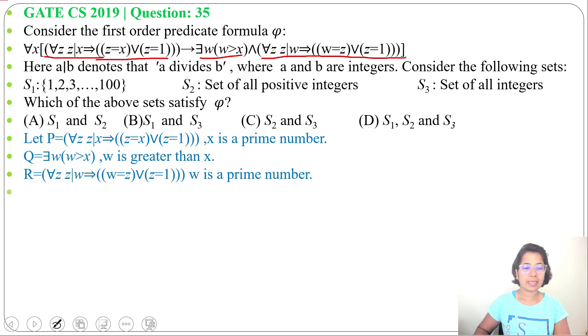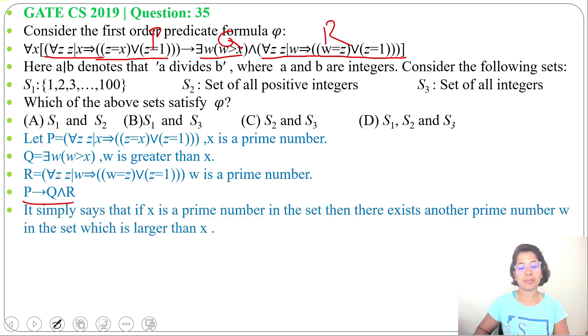So we can write it as P implies Q and R. If this is P, this is Q, this is R, then P implies Q and R. In sentence form we can say: if x is a prime number in this set, then there exists another prime number w in this set which is larger than x.